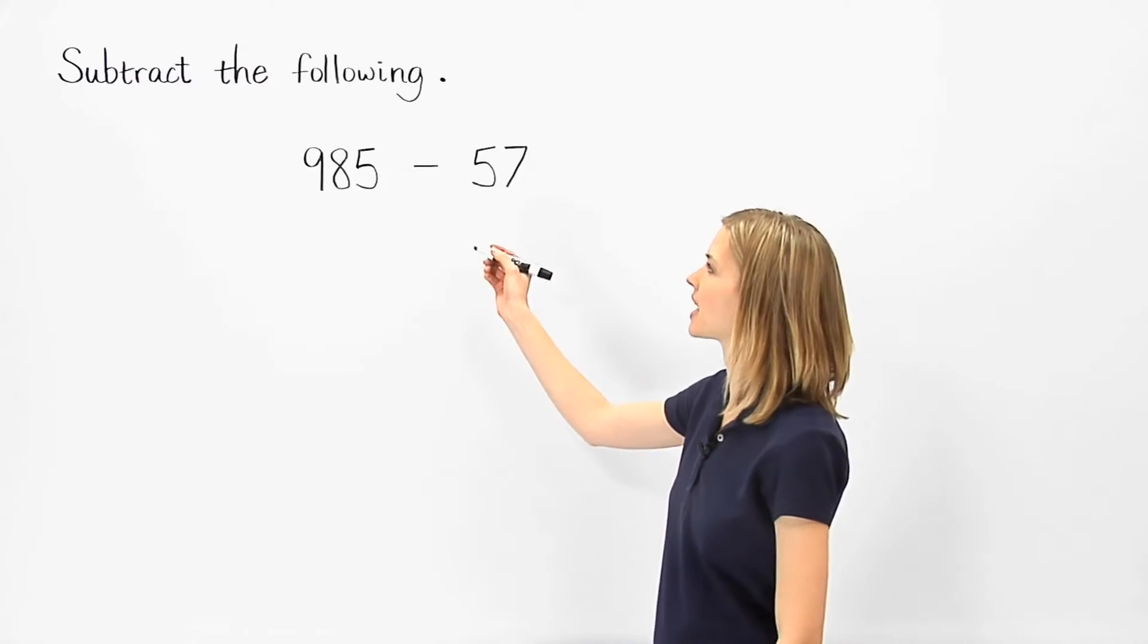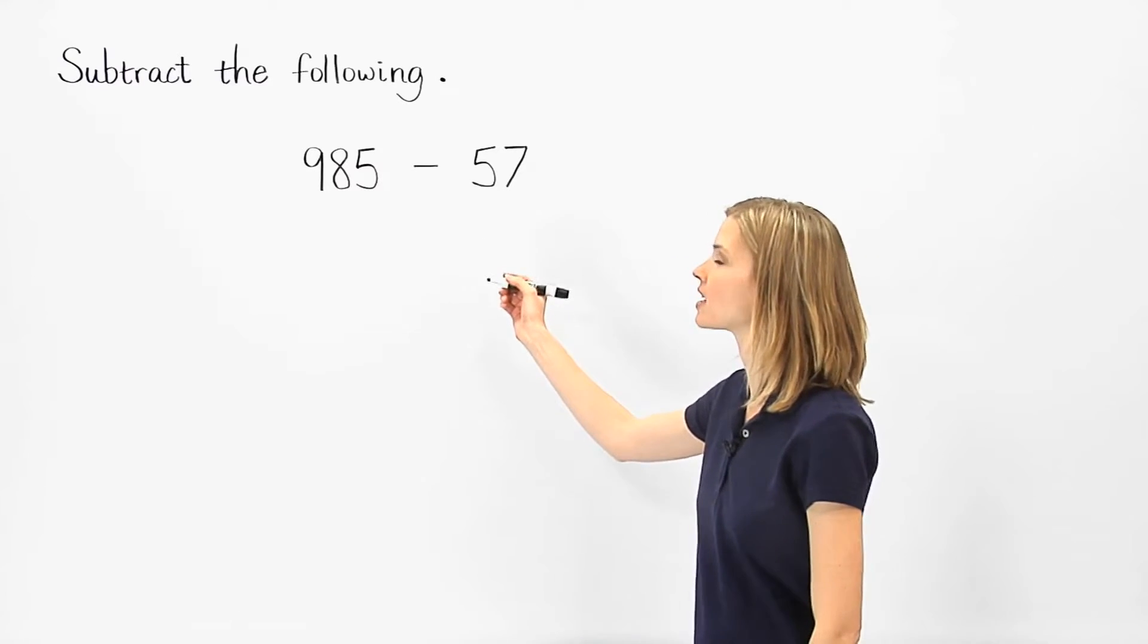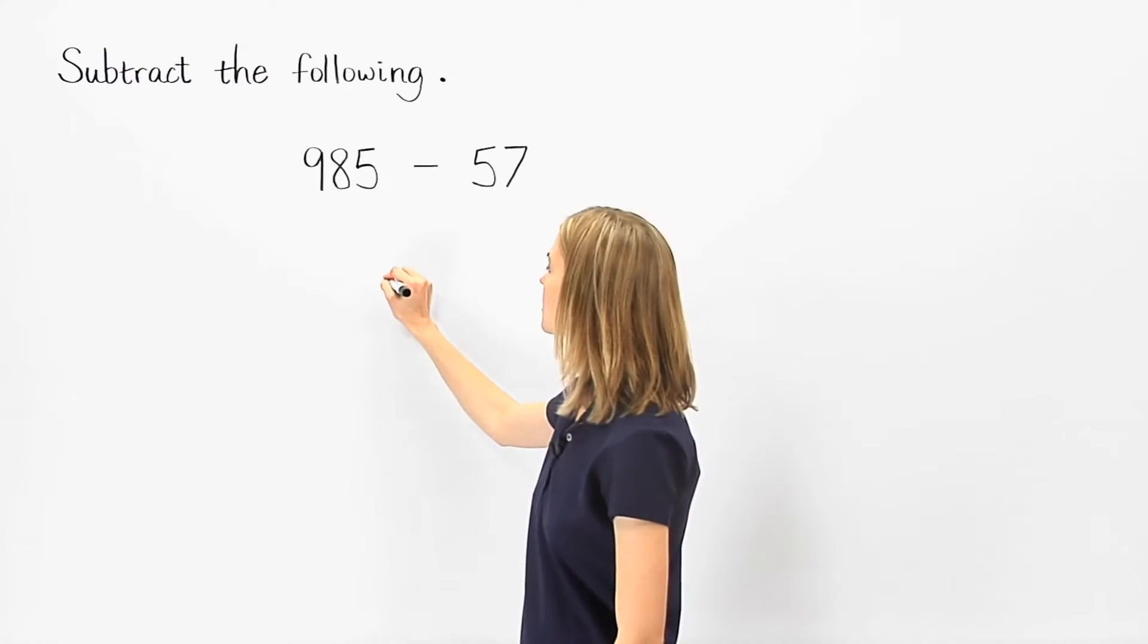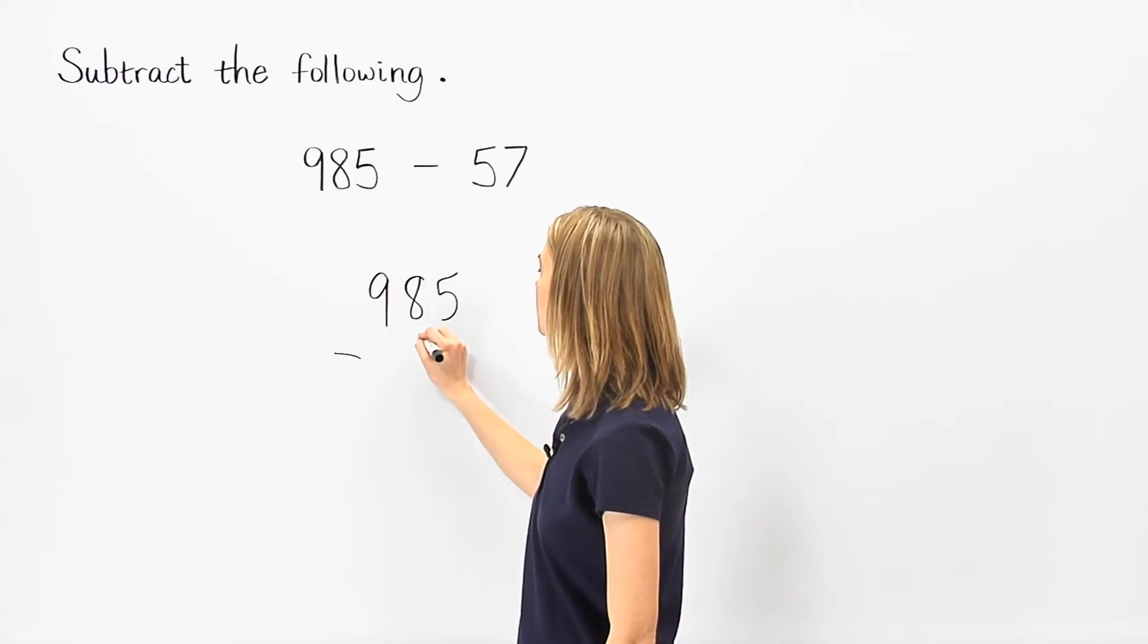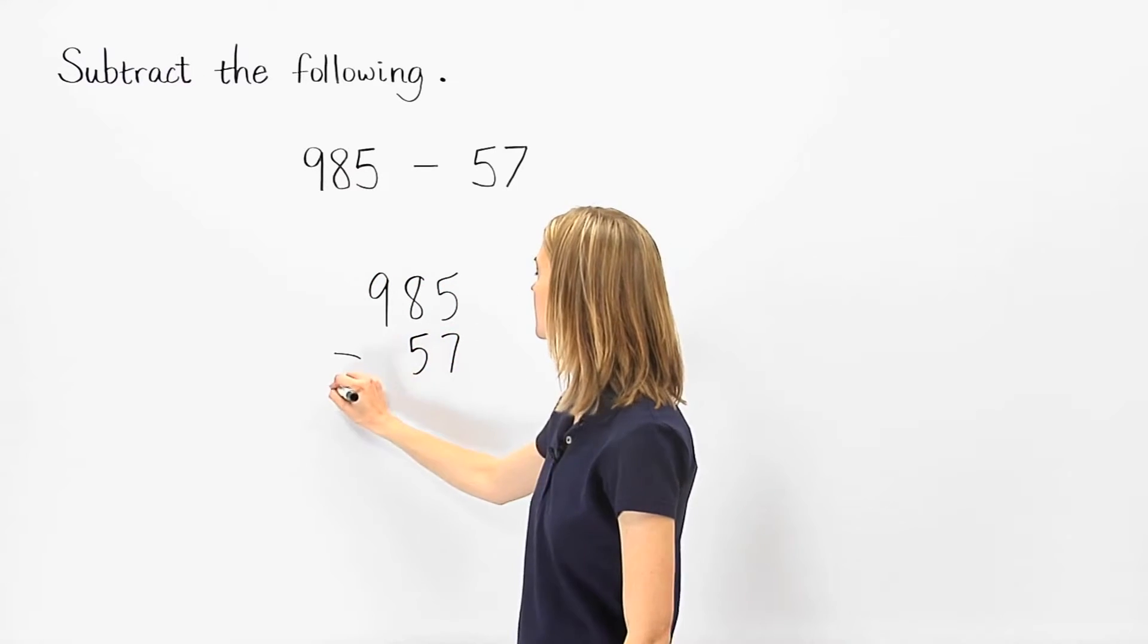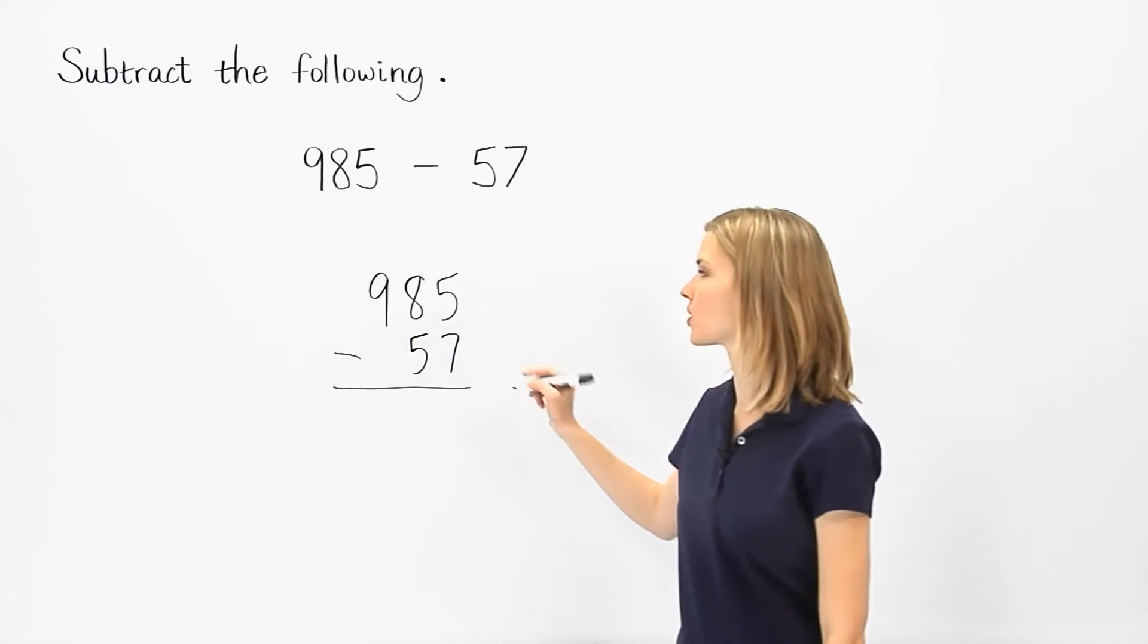To subtract 985 minus 57, first line up the numbers, 985 minus 57, so that the unit's digits are in the same column.